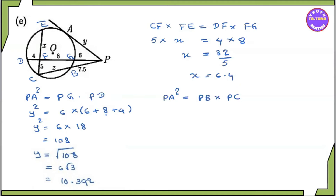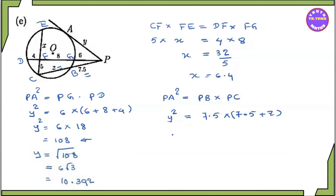Ba square so we have y squared. y squared so we have 1, 0, 8. y squared equal to BB 7.5 into BC 7.5 plus z. 7.5 plus z. This is BC so we have 7.5 plus z.